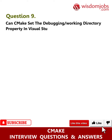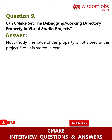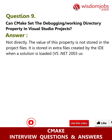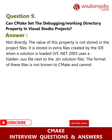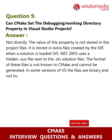Question 9: Can CMake set the debugging/working directory property in Visual Studio projects? Answer: Not directly. The value of this property is not stored in the project files — it is stored in extra files created by the IDE when a solution is loaded. Visual Studio .NET 2003 uses a hidden .suo file next to the .sln solution file. The format of these files is not known to CMake and cannot be generated.